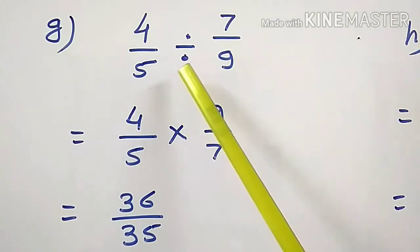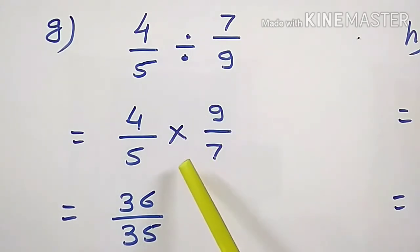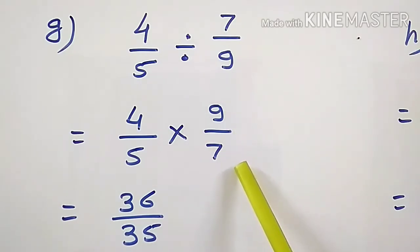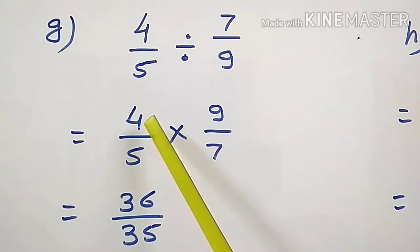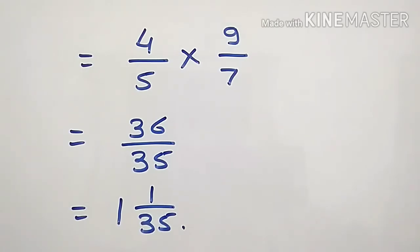Question G: 4/5 divided by 7/9. Write 4/5, change the sign of division into multiplication and take the reciprocal of fraction 7/9, which is 9/7. No common factor in numerator and denominator. Product of numerator: 4 into 9 is 36. Product of denominator: 5 into 7 is 35. So 36/35, which is an improper fraction. Divide 36 by 35: quotient 1, remainder 1. So 1 and 1/35 is the answer.